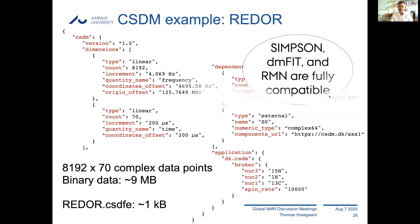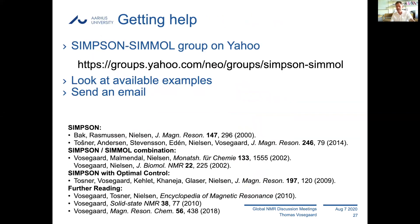SIMPSON, DMFIT, and RMN - developed by myself, Dominic Macho, and Phil Grandinetti - are fully compatible with the Core Scientific Data Model. I hope people will start using it because it's very nice to provide self-contained datasets. For getting help with SIMPSON: we have a discussion forum on the web - use it, there are people who answer questions there. Also look at the available examples, or send an email, though sending to the group increases the chances of getting a fast answer. I also advise you to read the papers.